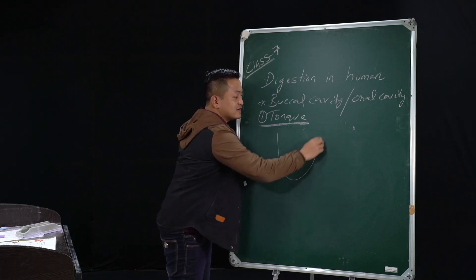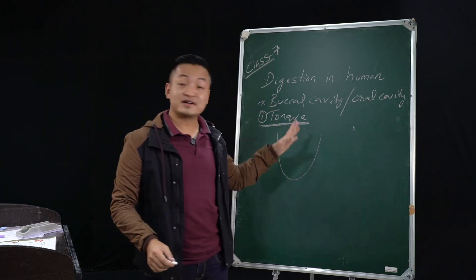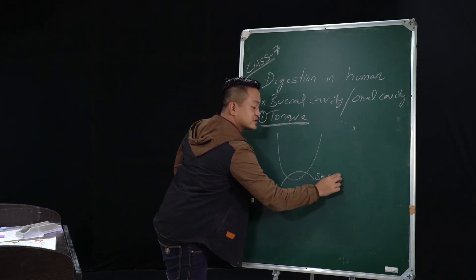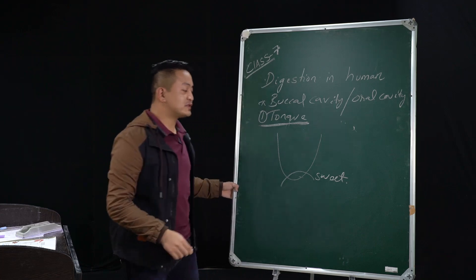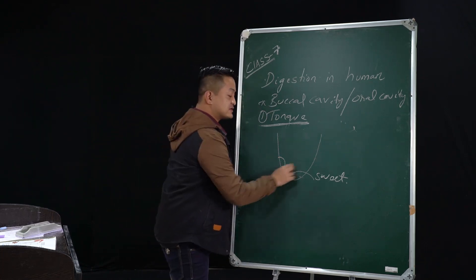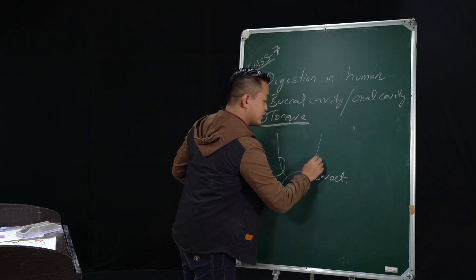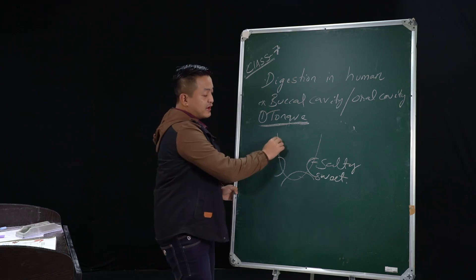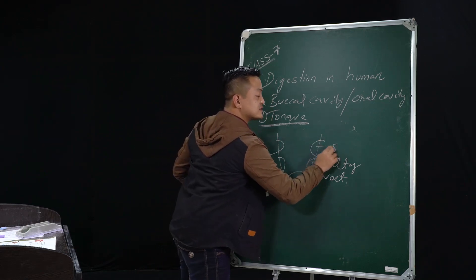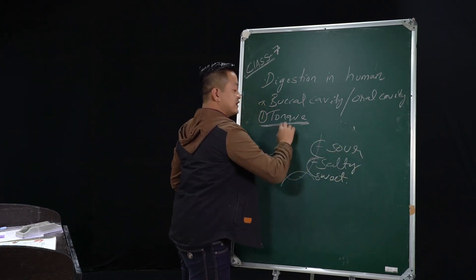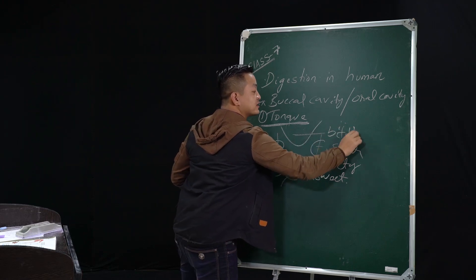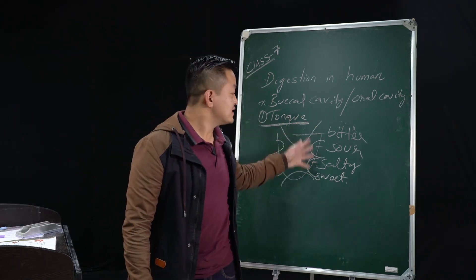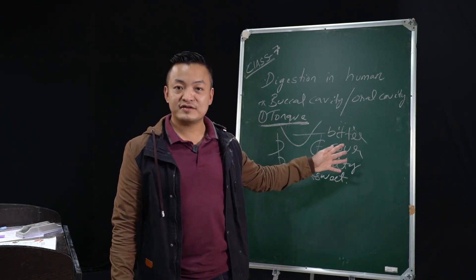Our tongue looks like this in a rough diagram. The front part is for sweet taste. The side parts would be for salty taste. After that comes the sour taste, and here at the back it would be bitter. So these are the different tastes we have: sweet, salty, sour, and bitter.